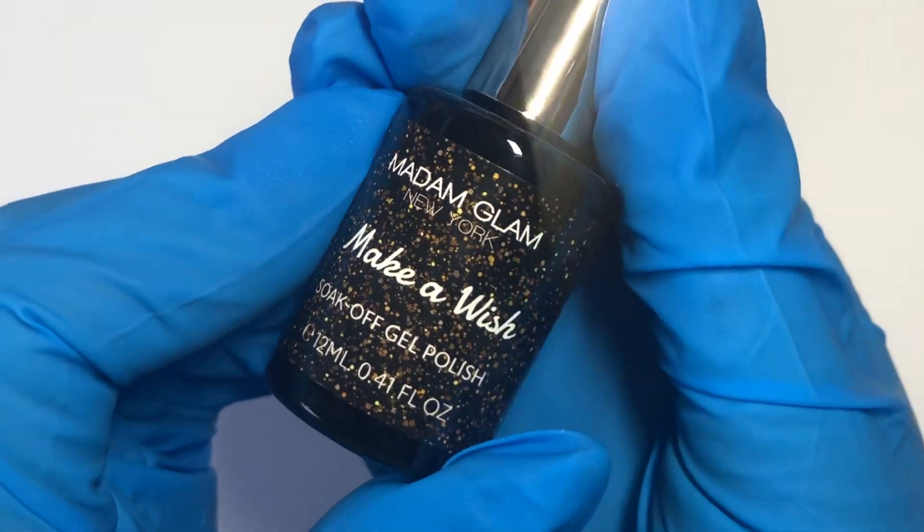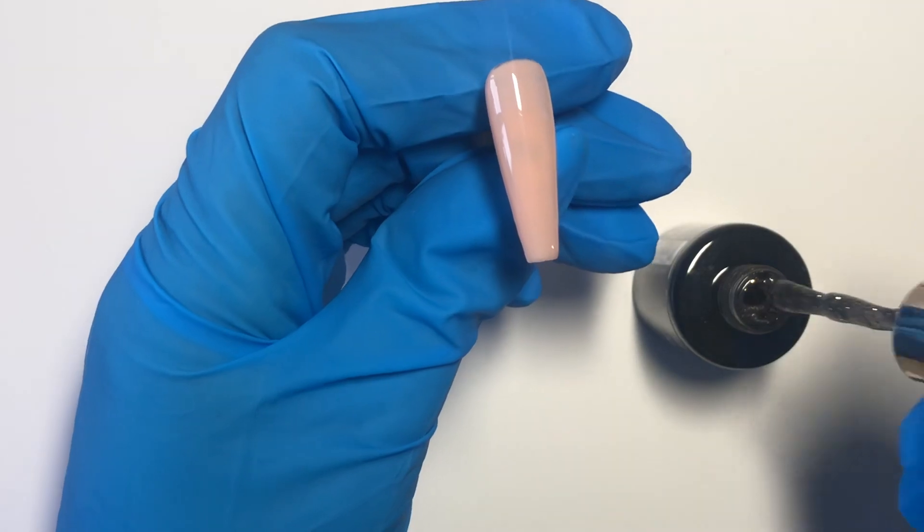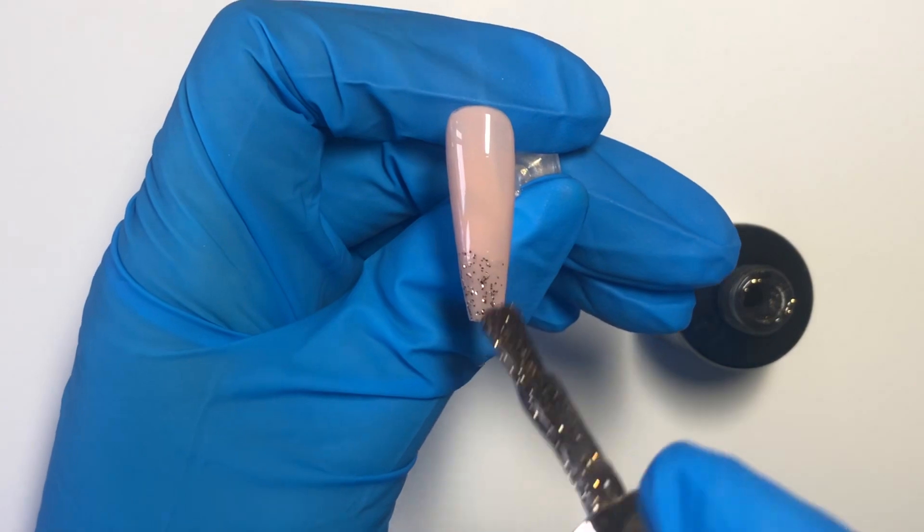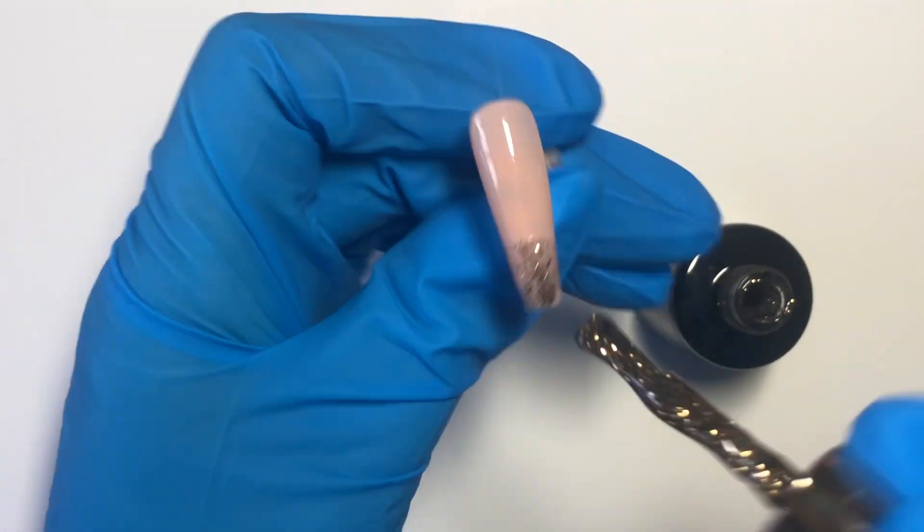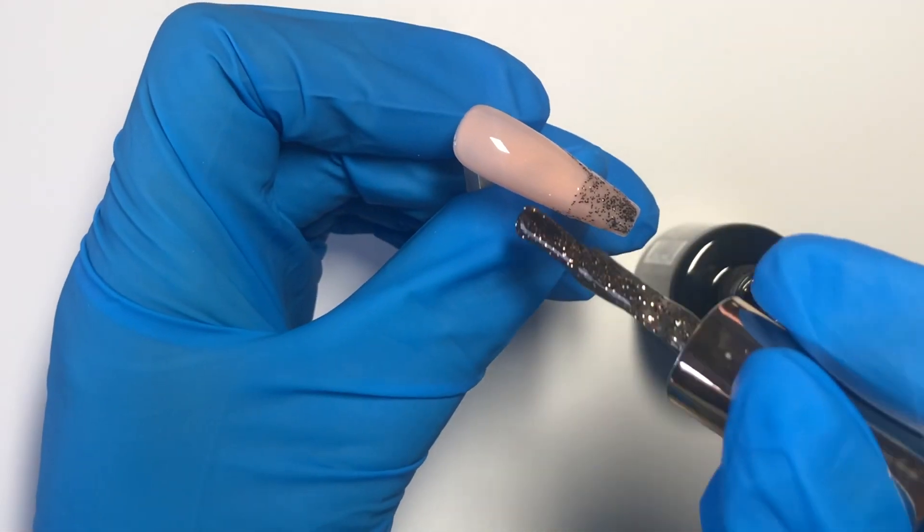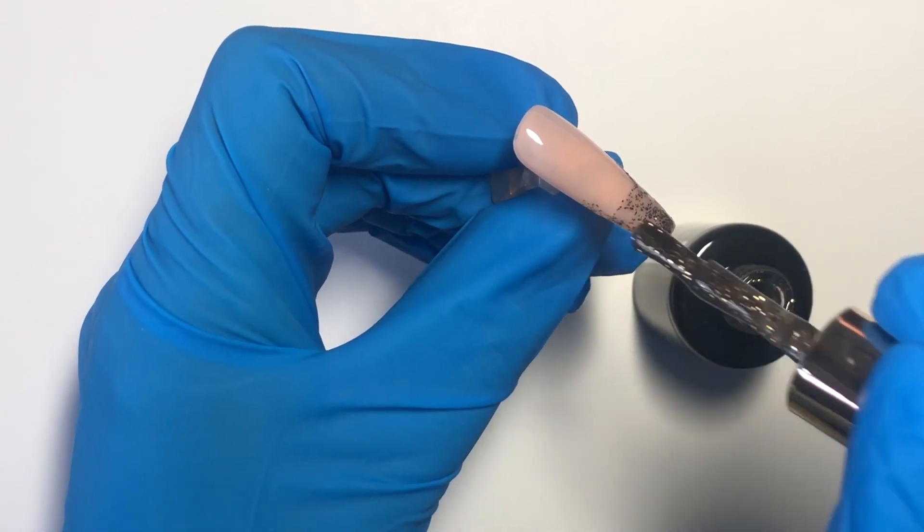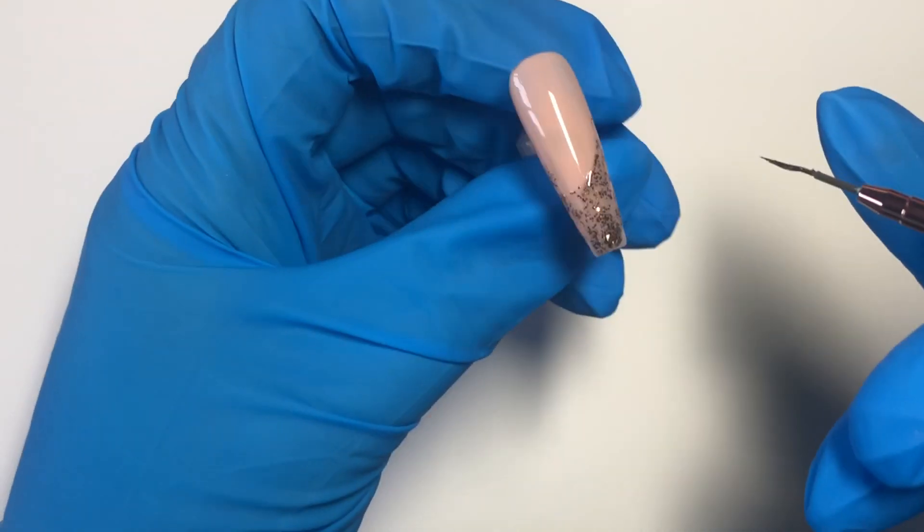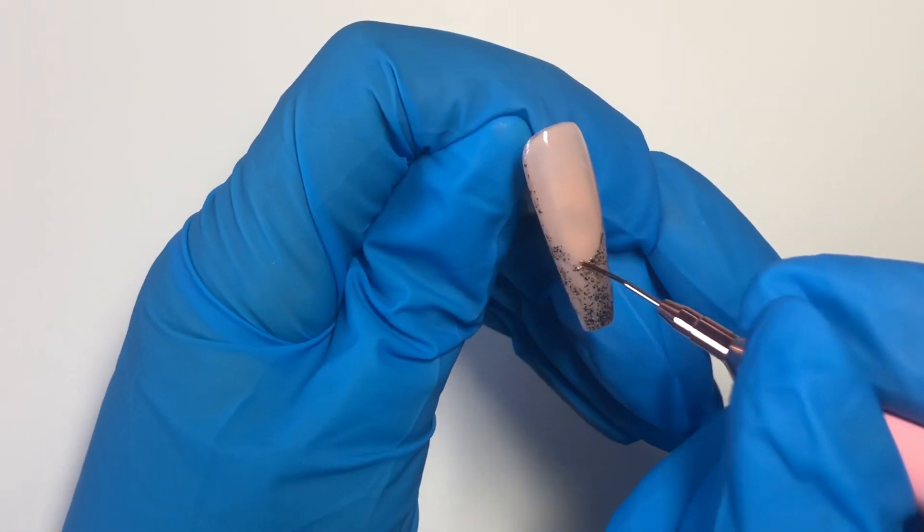Next up I'm going to go in with Madam Glam's Make-A-Wish. This is a glitter gel polish from their New Year's collection. As you can see here, it is a black and gold glitter gel polish. Very unusual, very standout-ish and unique. I was really dying to use this color and I haven't used it yet. So I wanted to see what it would look like in this set.